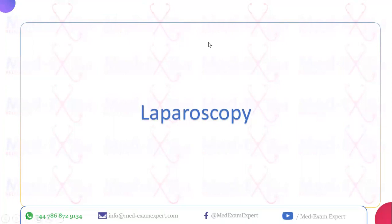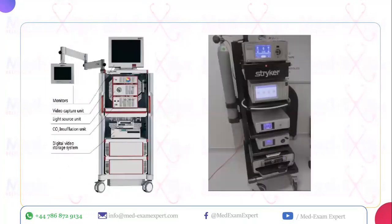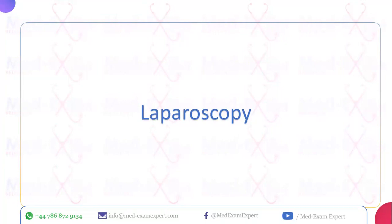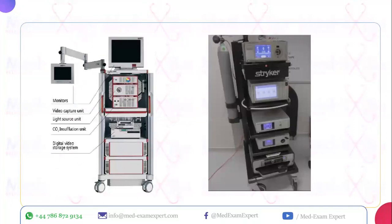Now moving to laparoscopy. First, a brief overview of instruments. In the exam they may not ask about instruments directly, but knowing the basics helps answer questions. The laparoscopy tower includes, from bottom to top: a medical grade printer, a light source, a video capture unit which captures and stores images from the digital camera, an insufflator, and a carbon dioxide cylinder. There are usually two monitors — one for the surgeon and one for the first assistant.